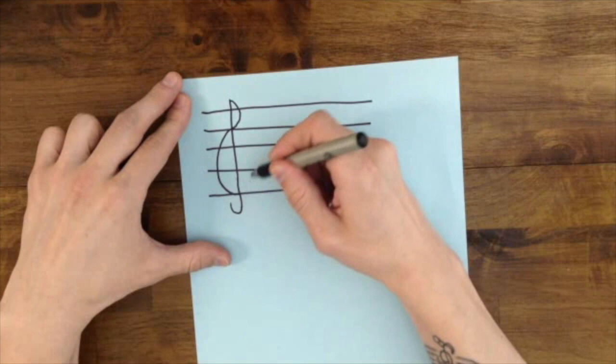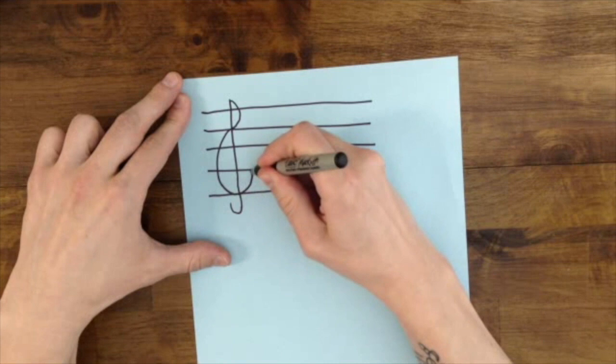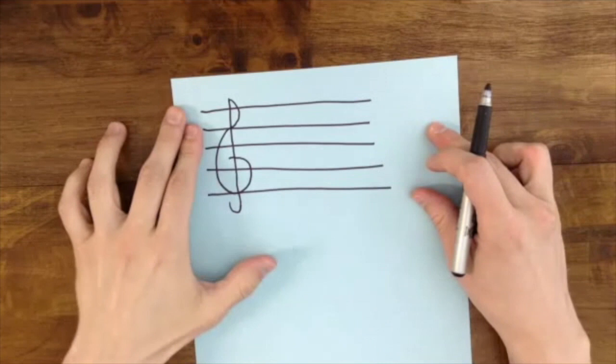And then from here we're going to do that bullseye around the second line, the G line. We're going to create that bullseye, bam, look at that treble clef.